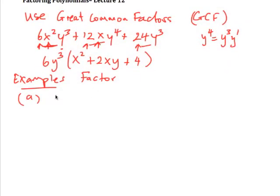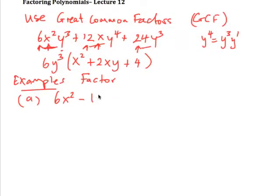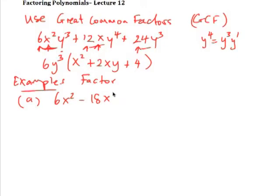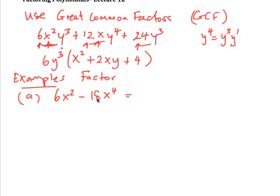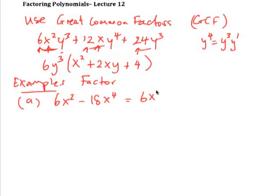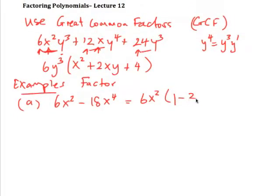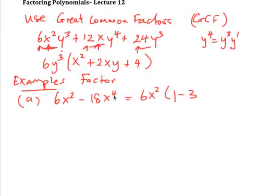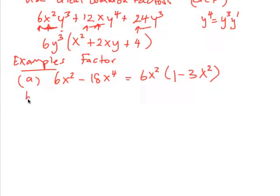Part A: let's factor 6x² - 18x⁴. There's a 6 in both terms, and x² is common (since x⁴ = x²·x²). Factoring out 6x² leaves 1 from the first term and 3x² from the second term. So the factored form is 6x²(1 - 3x²).